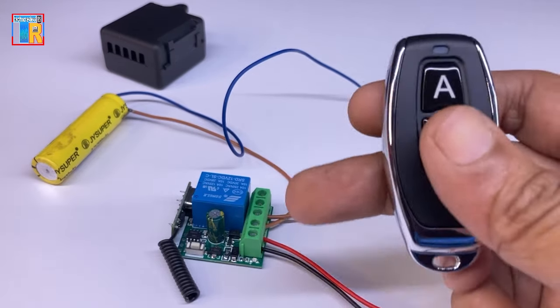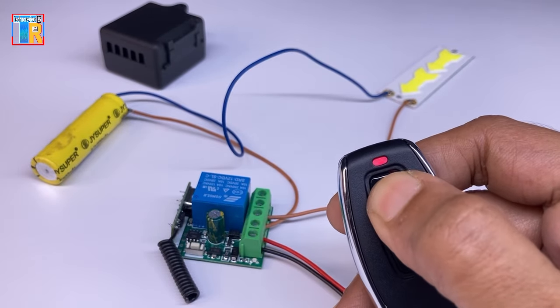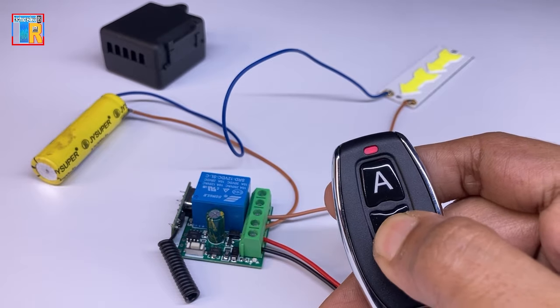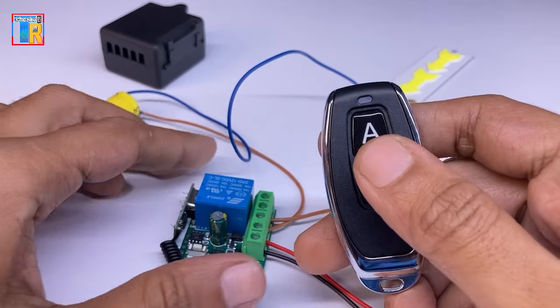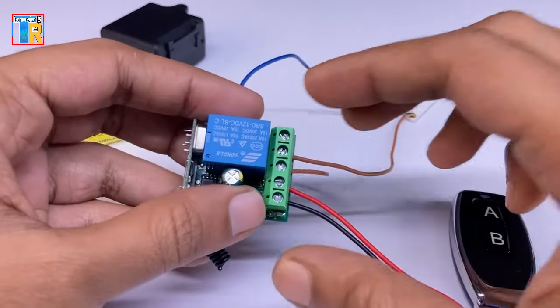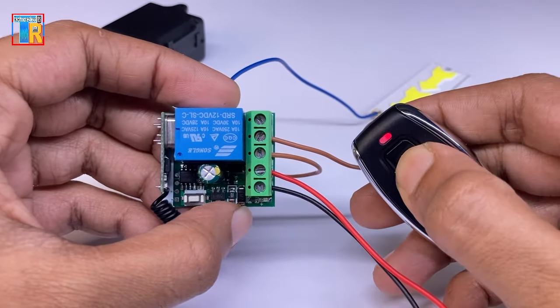Now when you press the remote it should work but it's not working. Upon further investigation I found that this relay module has four selection modes. If any mode is not selected, the remote would not work.